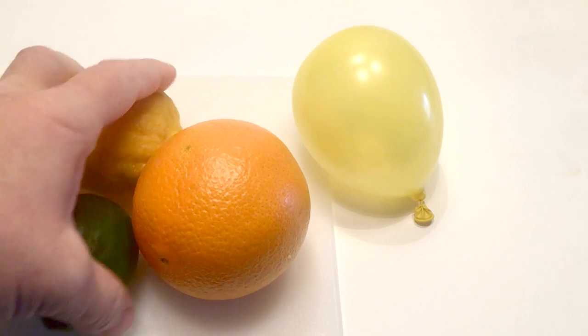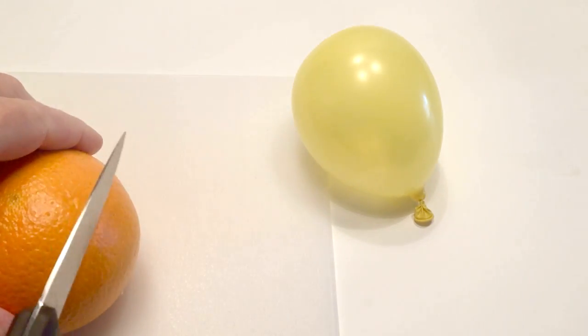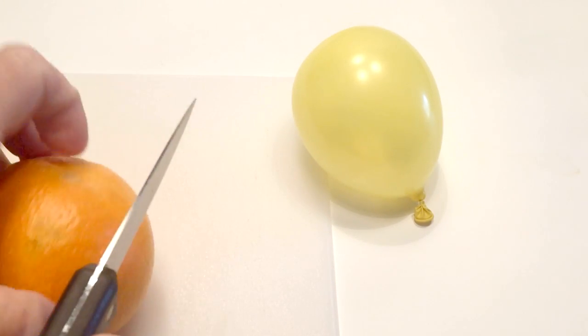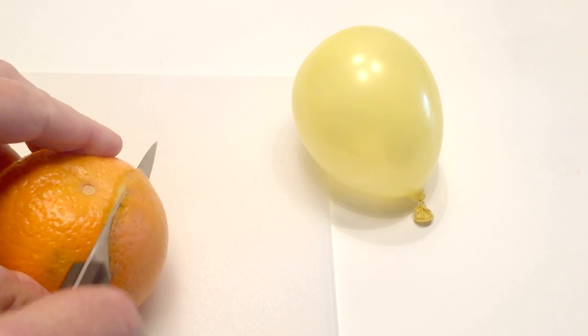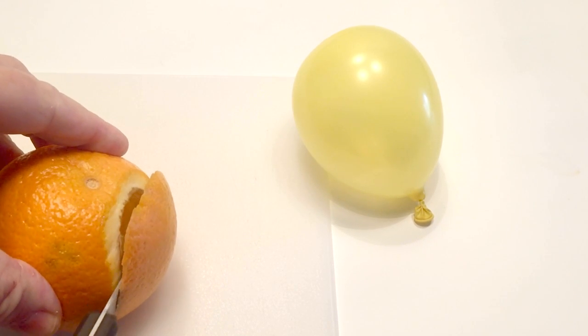You start off by blowing up your latex balloon, and then you take your orange and carefully cut off the outside peel of the orange. The juice from the orange peel causes the balloon to pop.